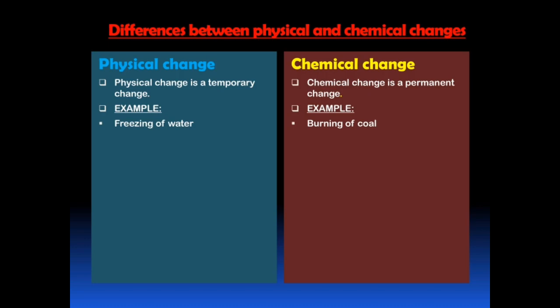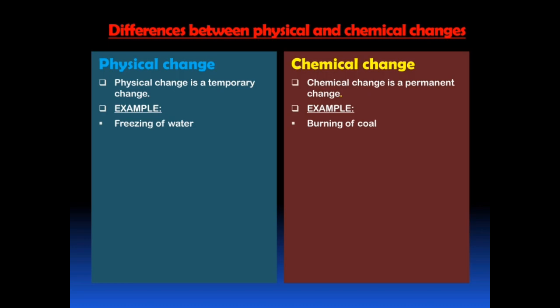For example, freezing of water. If water changes to ice on freezing, we can get back water from that ice. Therefore, this change is temporary — that's why physical changes are temporary changes. On the other hand, once one substance changes to another substance, if it was a chemical change, we can't get the original substances back. For example, burning of coal: if coal changes to ash on burning, we can't get back coal from the ash. Therefore, this change is permanent — that's why chemical changes are permanent changes.